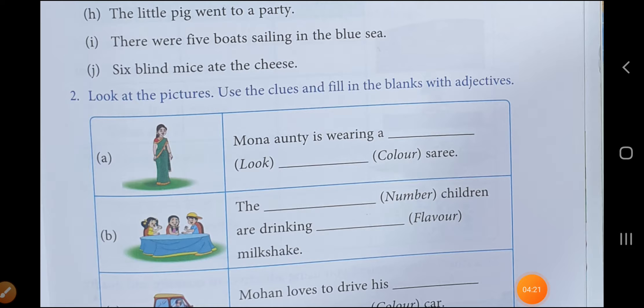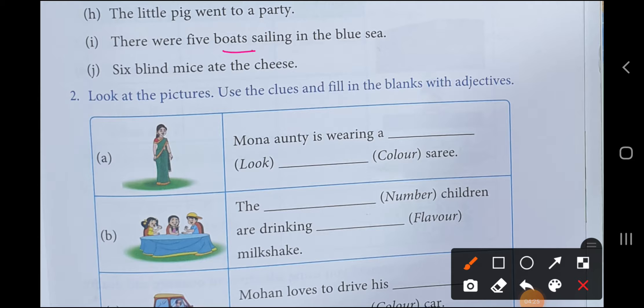Next one. There were five boats sailing in the blue sea. Boats, noun. Sea, noun. Now how many boats are there? Five. Five boats, so five is adjective. How is the sea? Blue. So blue is adjective. Color, right? I told you that the name of color is also adjective.